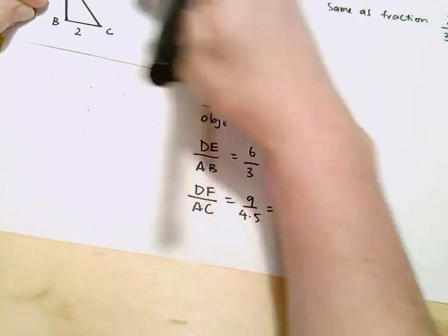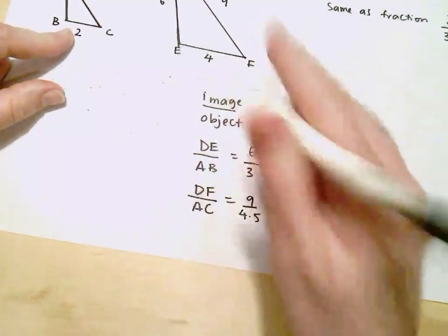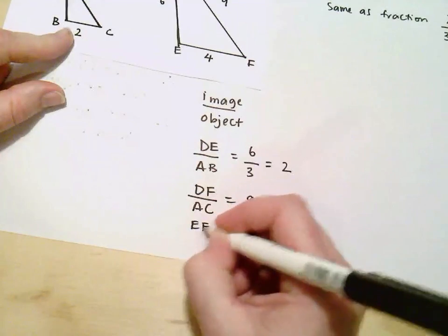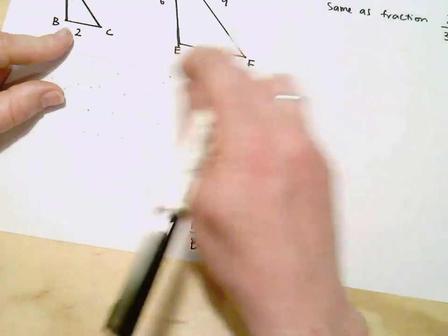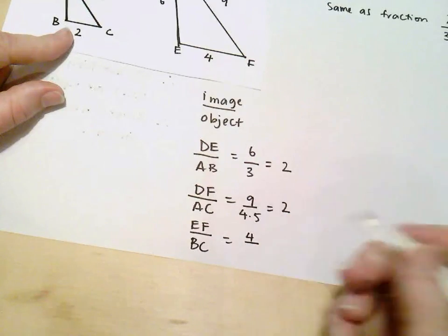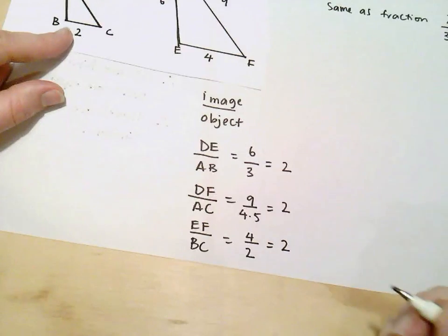I've done this one and this one. I've just got to make sure I look at this bottom one here. So I'm looking at EF. The ratio of EF to BC. EF has a length of 4 cm in this case. BC has a length of 2. And 4 divided by 2 is 2.